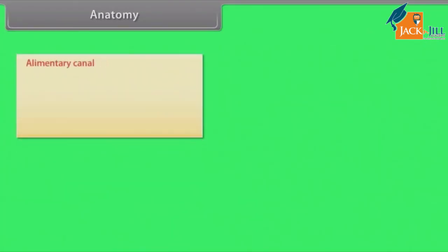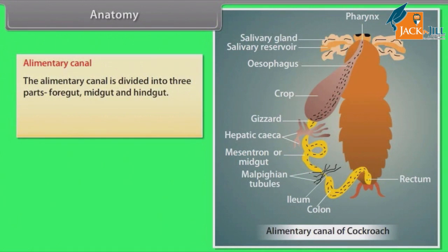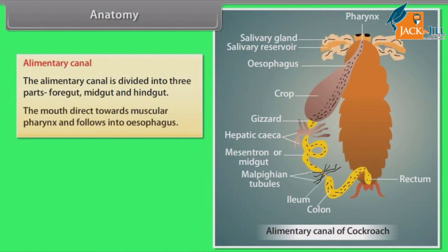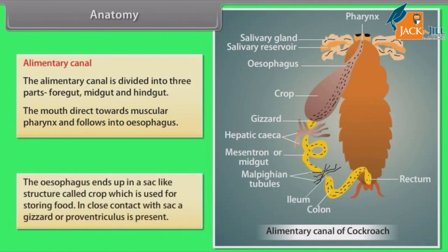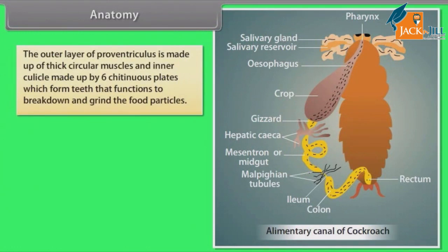Anatomy — Alimentary Canal: The alimentary canal is divided into three parts: foregut, midgut, and hindgut. The mouth leads to a muscular pharynx and then into the oesophagus. The oesophagus ends in a sac-like structure called the crop, used for storing food. In close contact with the crop, a gizzard or proventriculus is present. The outer layer of the proventriculus is made up of thick circular muscles and a cuticle made up of six chitinous plates which form teeth that function to break down and grind food particles.